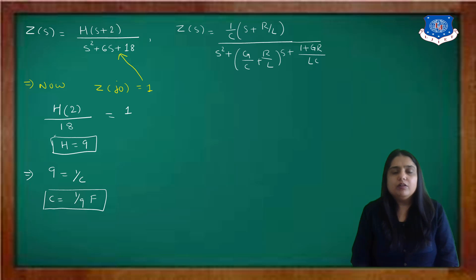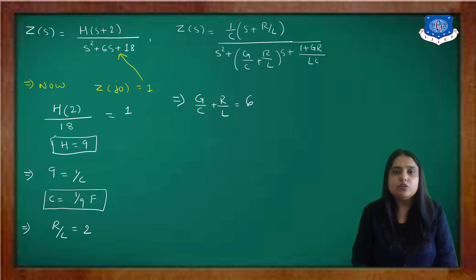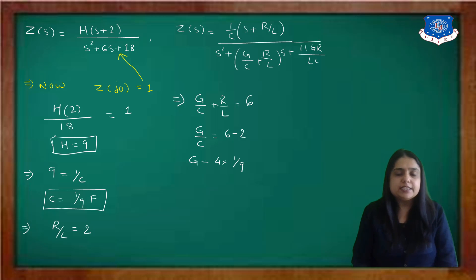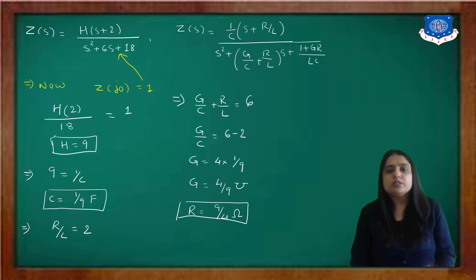Comparing numerators: s + R/L corresponds to s+2, so R/L = 2. Comparing denominators, the coefficient of s is 6 on the pole-zero side and (G/C + R/L) on the circuit side. Substituting R/L=2: G/C = 6−2 = 4, and with C=1/9, G = 4/9 siemens. Therefore R = 1/G = 9/4 ohms.